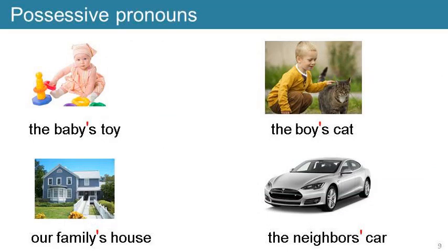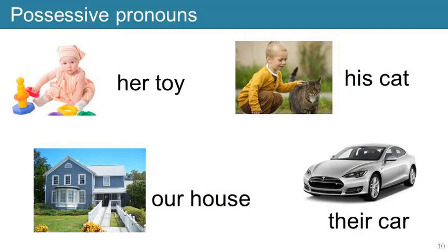Now let's change topics. In the first lesson in this series about apostrophes, we looked at possessive nouns. The apostrophe is used to show possession. But when we know which possessor is being talked about, we can use a pronoun — for example, 'her toy' instead of 'Sally's toy'. Among the other possessive pronouns are 'his', 'our', and 'their'. No problem and no apostrophes here.